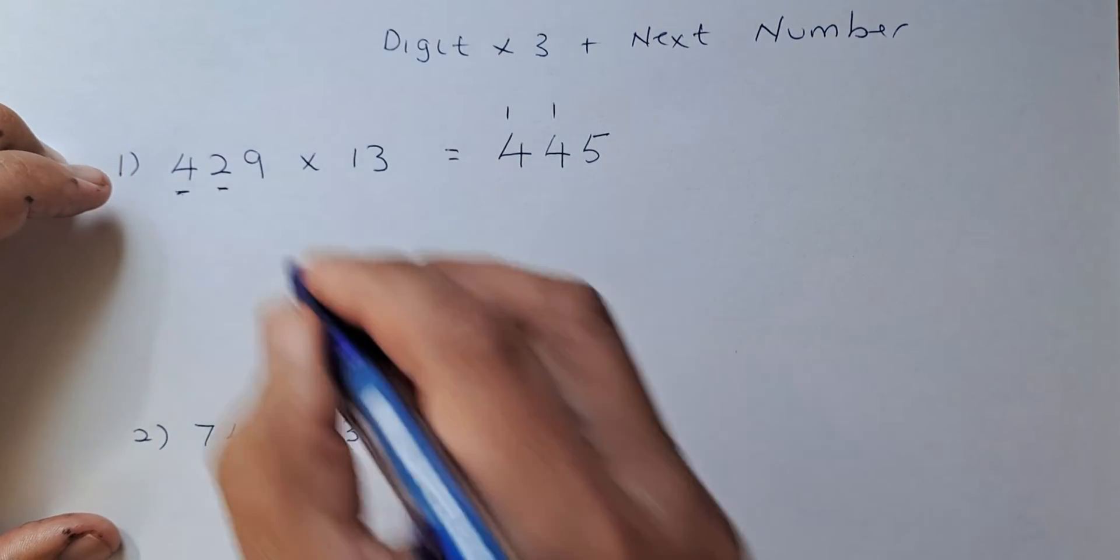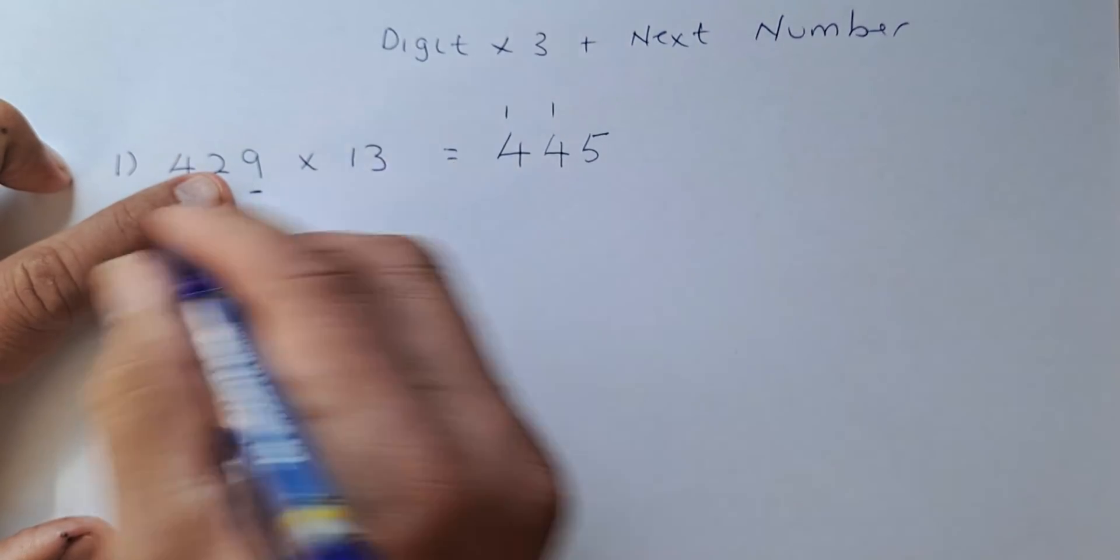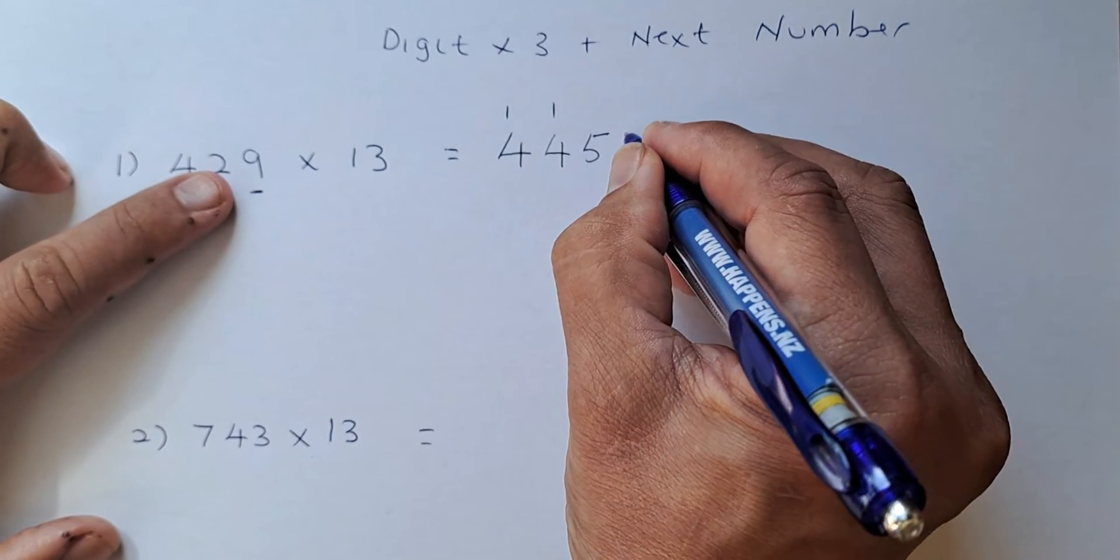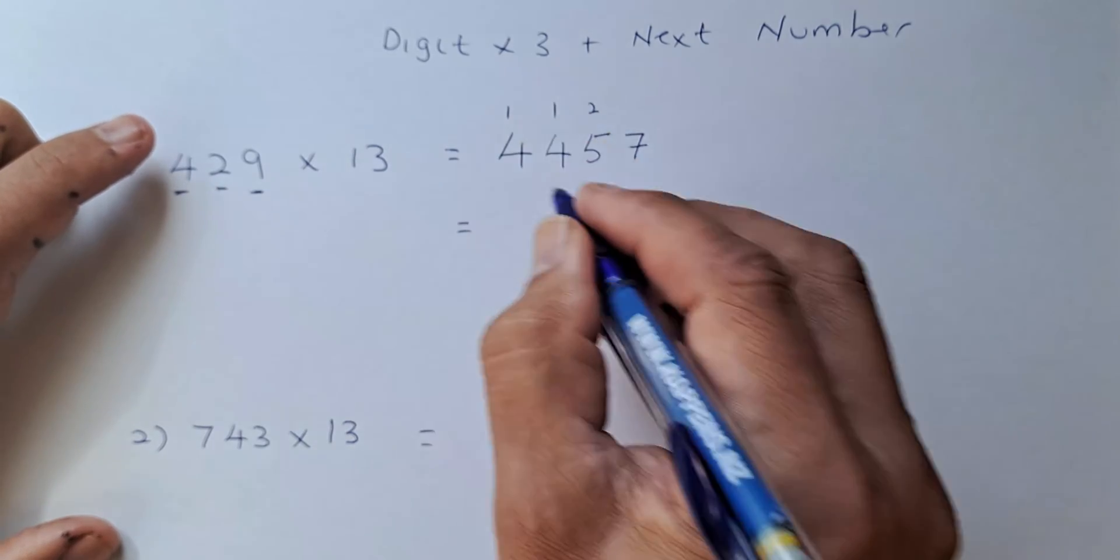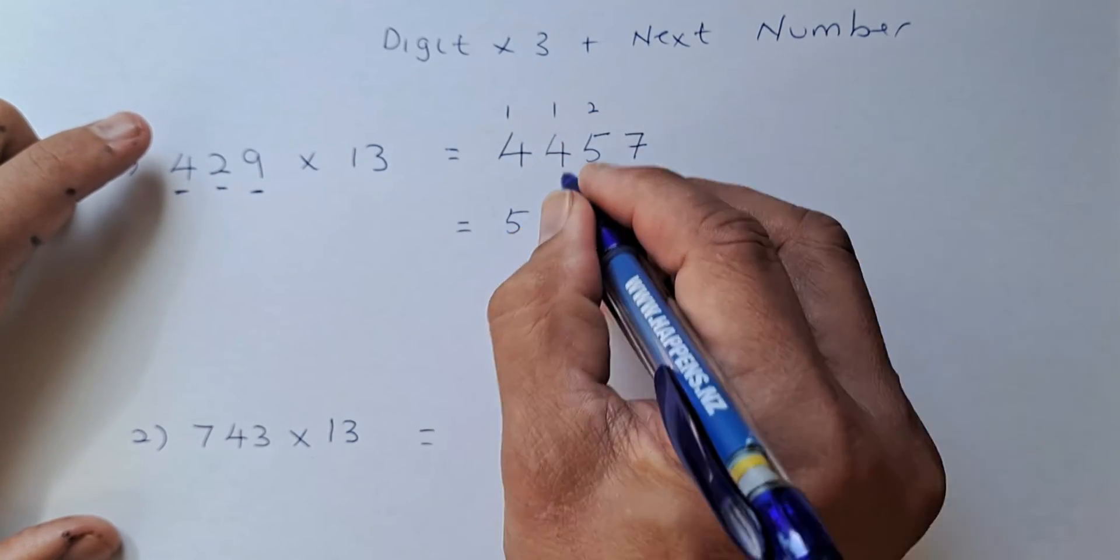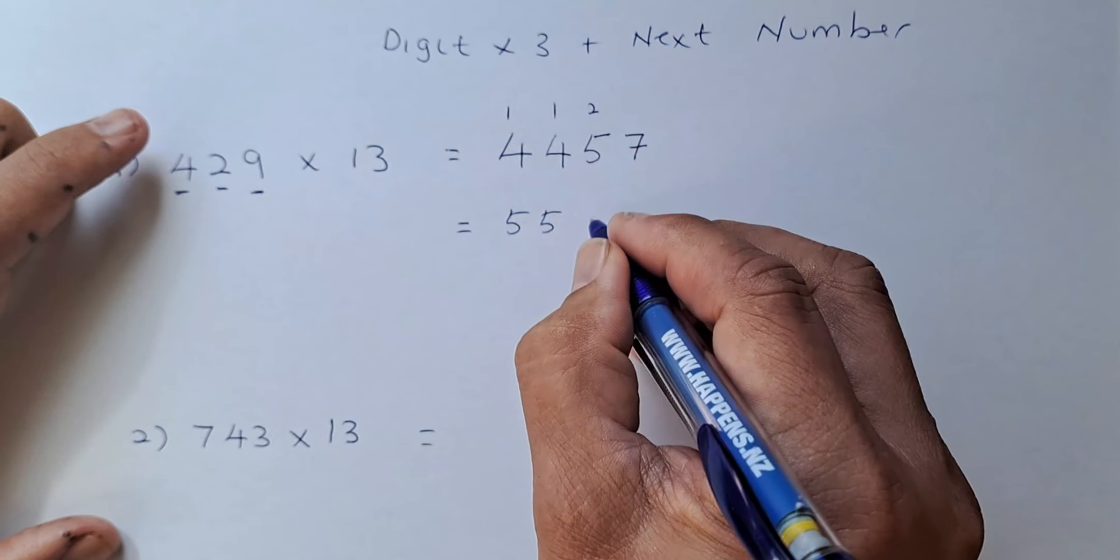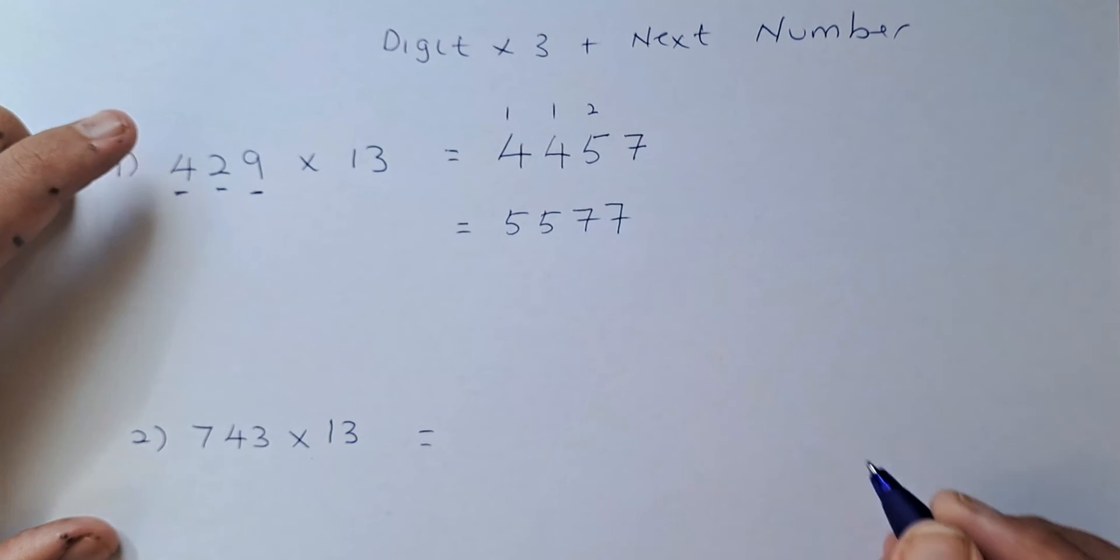Next, we look at number 9. 9 times 3, there's no other number. So 27, 7 carry up 2. We're going to add the numbers. So 4 plus 1 is 5. 4 plus 1 is 5. 5 plus 2 is 7. And that will be 7.